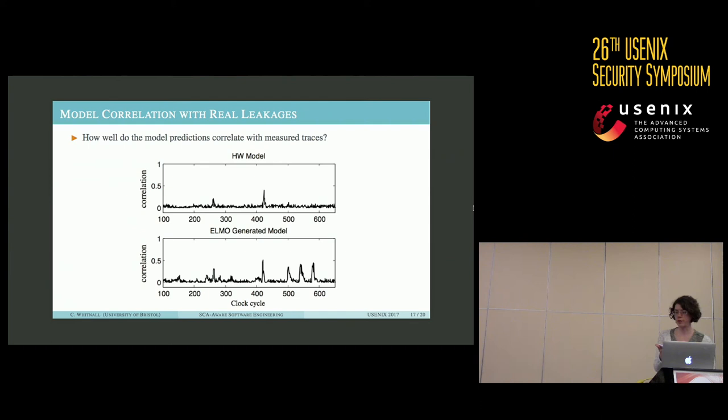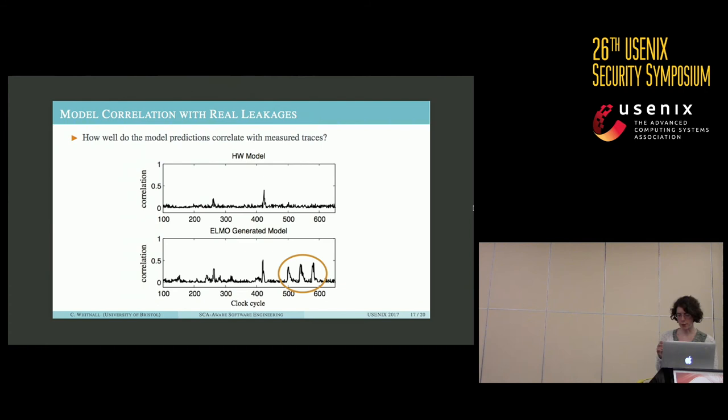The first thing we wanted to check is how well the model predictions correlate with measured traces. The top figure shows the correlation between the Hamming weight of the first round output and measurements taken from the M0 as it performs AES. The second figure shows the corresponding correlation trace when the Hamming weight model is replaced with our ELMO model prediction. We can easily see that the ELMO model captures leakage information beyond that characterized by the Hamming weight, which implies that the Hamming weight model is not adequate for simulation purposes and that our more complex models are better suited to the task.